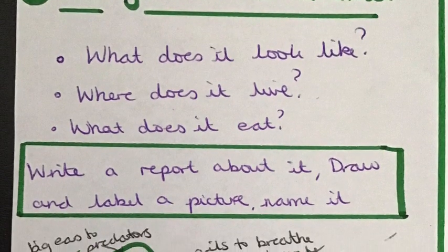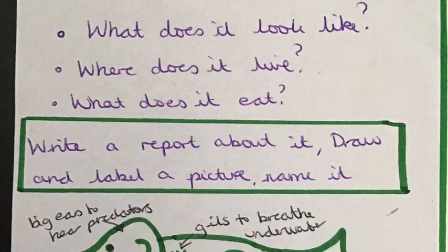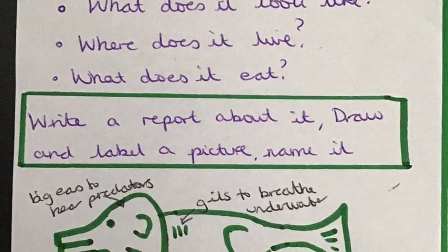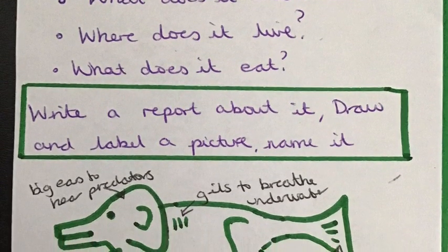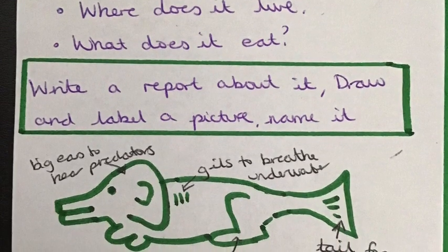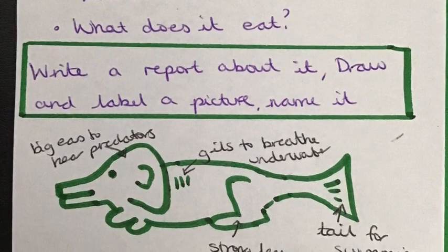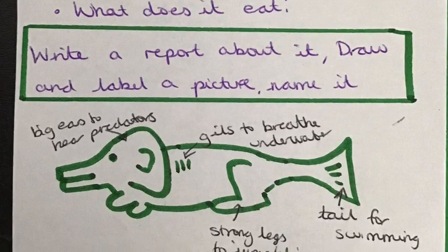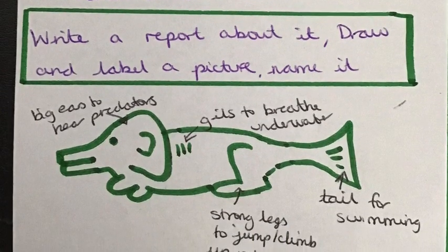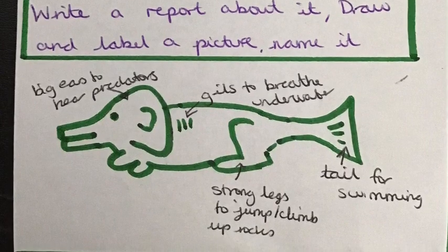Our first challenge is to design a new animal. Think about what it looks like, where it lives, and what it likes to eat. You might want to draw it and label it with the different parts and give it a brand new name. Then maybe you can write a report about it with the subheadings habitat, diet, and appearance.